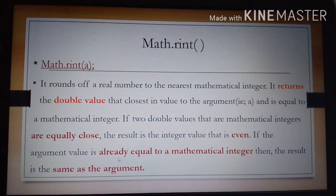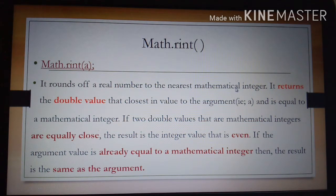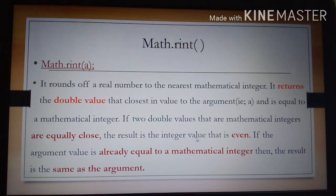The next function is Math.rint(). It takes an argument A, which should be a real number containing a decimal point. It rounds that real number to the nearest mathematical integer, returning a double value equal to a mathematical integer. If two mathematical integers are equally close, the result is the integer value that is even. If the argument is already equal to an integer, the result is the same as the argument.